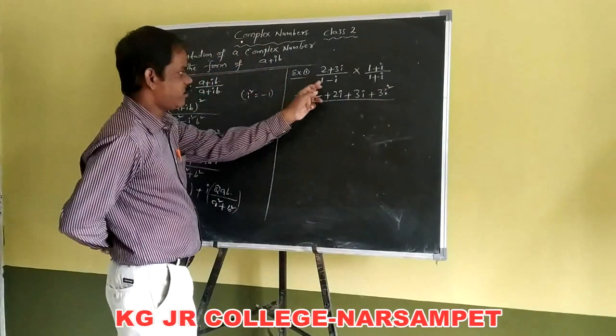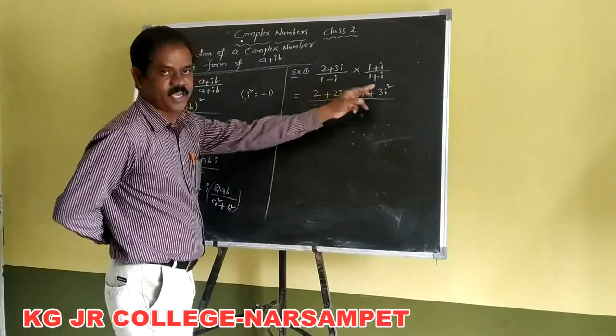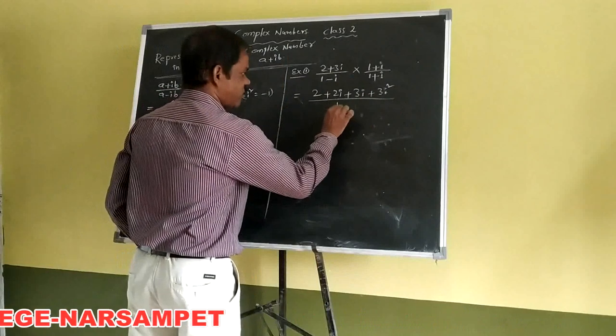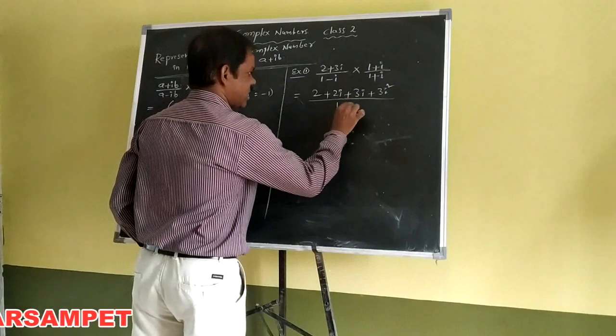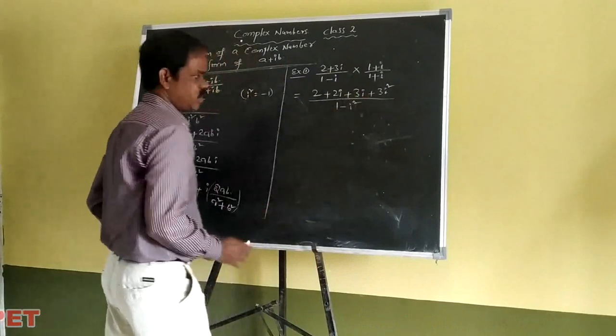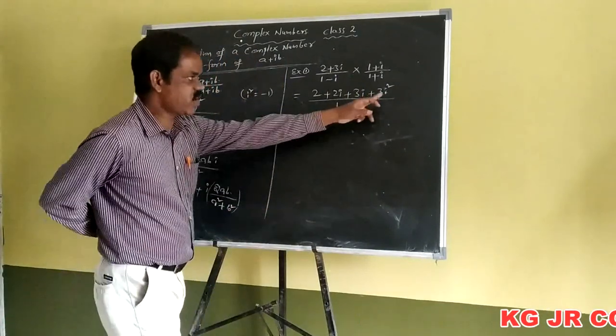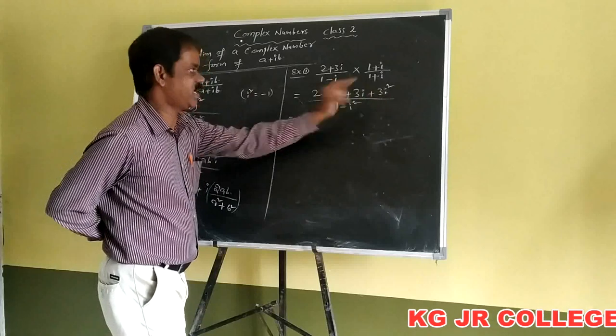The denominator is in the form of A minus B into A plus B, so it becomes 1 minus i squared. The value of i squared is minus 1.